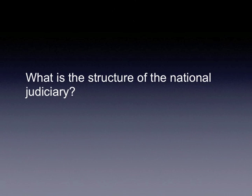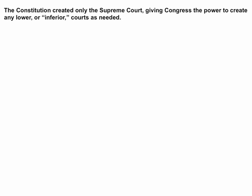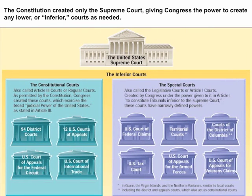What is the structure of the National Judiciary? The Constitution created the Supreme Court and left Congress to establish the inferior courts, which are the lower federal courts. The Constitution created only the Supreme Court, giving Congress the power to create any lower or inferior courts as needed. There are two types of federal courts.